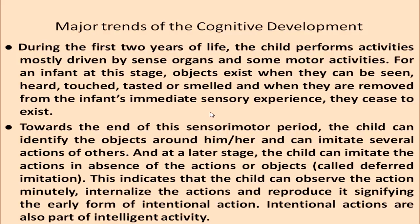For example, imitation would be if somebody waves a hand and the child imitates the same behavior, whereas deferred imitation would be if we ask a child to make the sound of a train and the child produces that sound even though the train is not present. This indicates the child can observe actions minutely, internalize them and reproduce them, signifying the early form of intentional action which is part of intelligent activity.